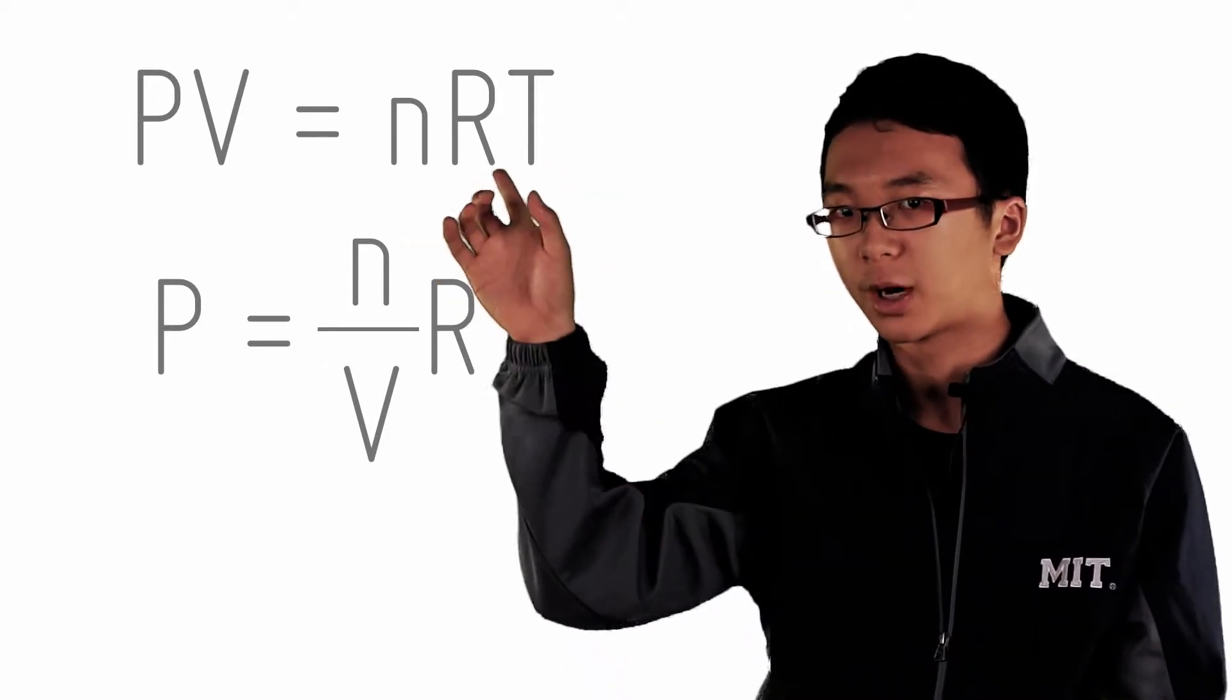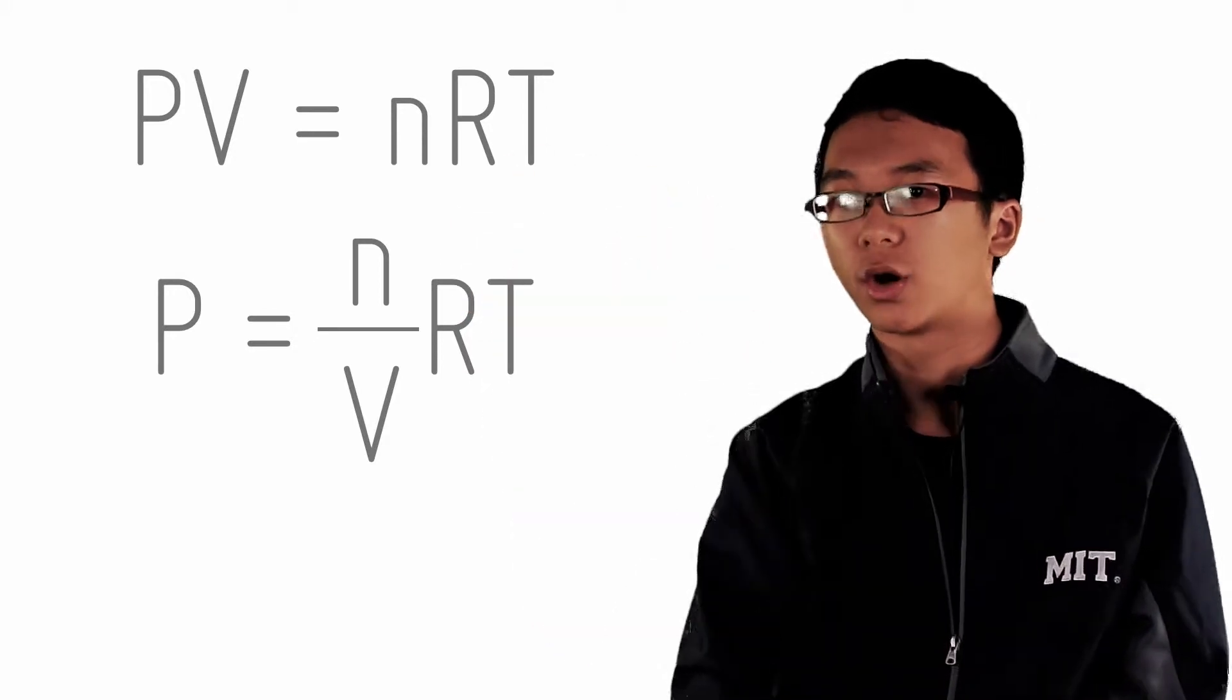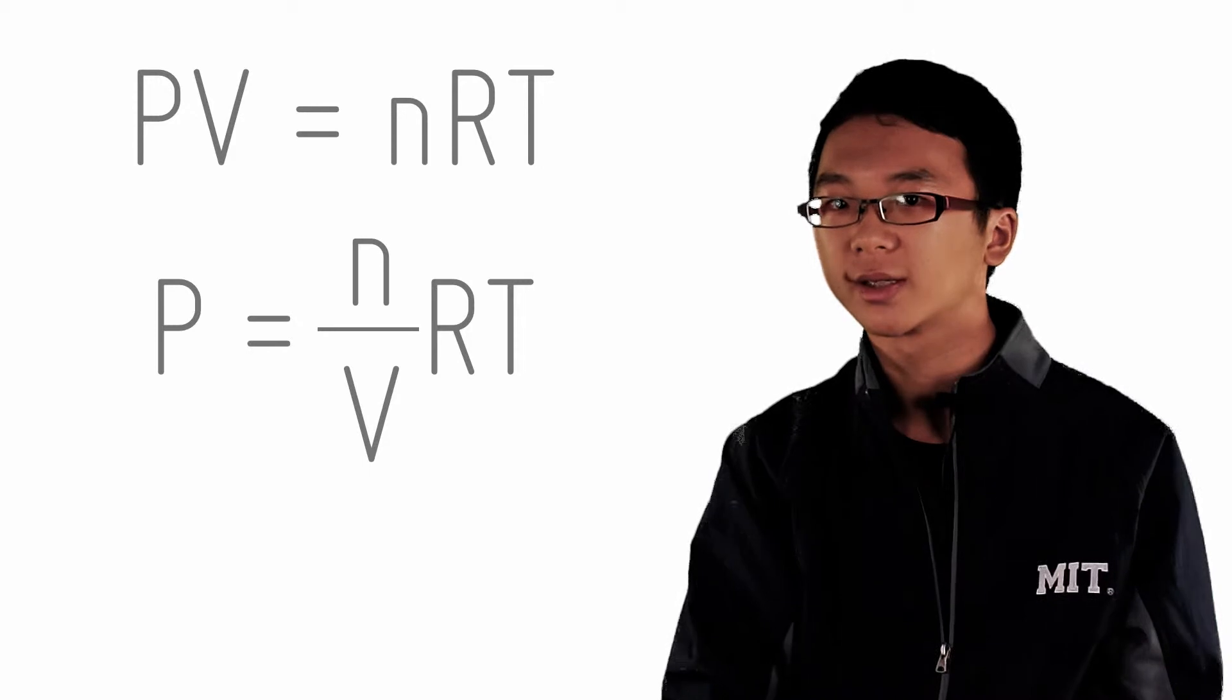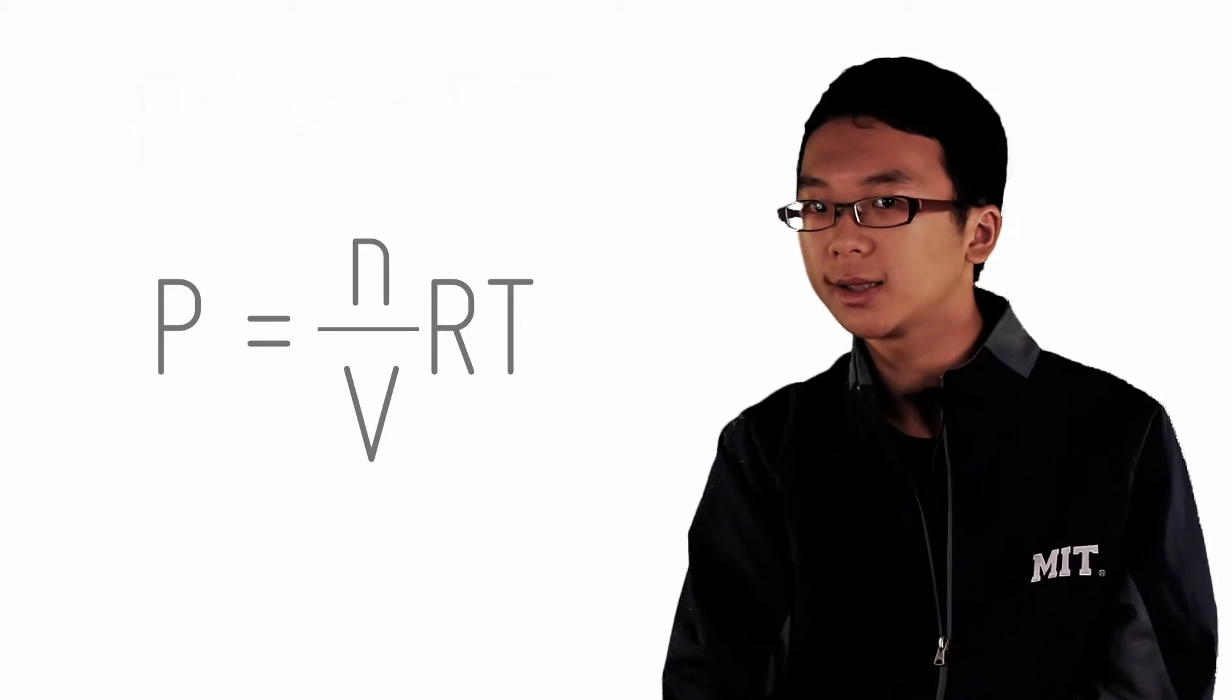And there you have it. P is your partial pressure, n/V is your concentration. Multiply that by a constant factor of RT. You can substitute this back into the equation to get Kc.